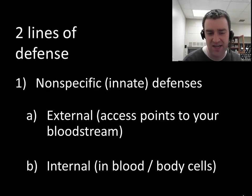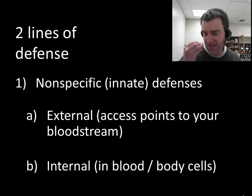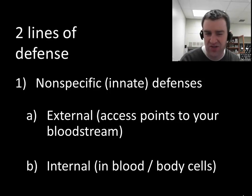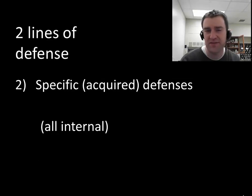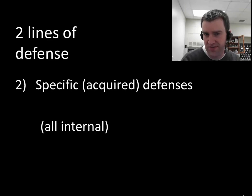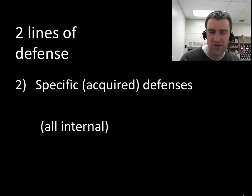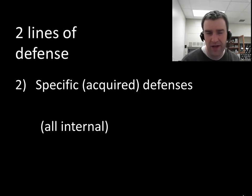I'm going to define anything as external as being outside your bloodstream. So you'll see that I even define the inside of your breathing tube and digestive tube as functionally outside your body — external — because it's outside of your bloodstream. There are also specific, or sometimes called acquired, immune defenses, which are part of your internal bloodstream area, and I'll say a lot more about those in the second video.